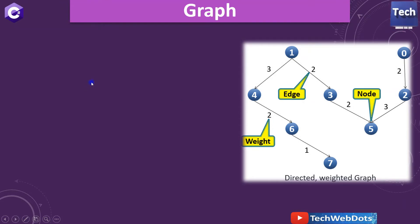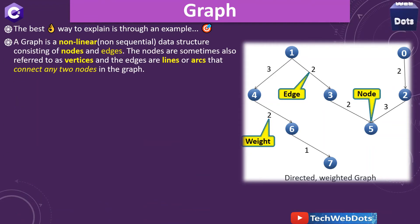Let's go by definition first. I know the best way to explain is through an example, but let's understand very important points related to graph. A graph is a non-linear or non-sequential data structure consisting of nodes. These are called nodes, this is 0, 2, 5, 1, 4, 6, 7. So these are the nodes I am indicating here.